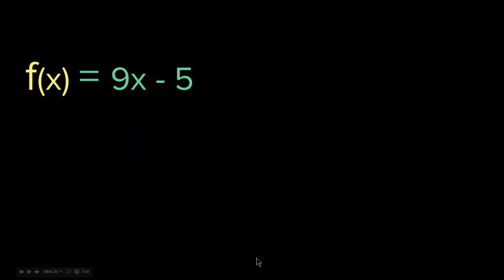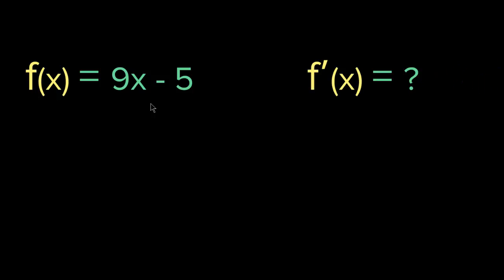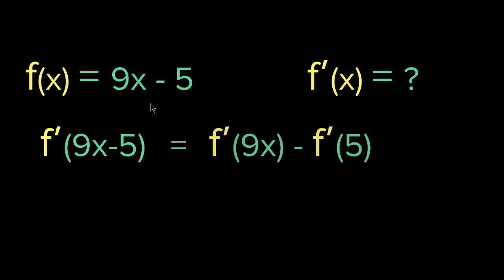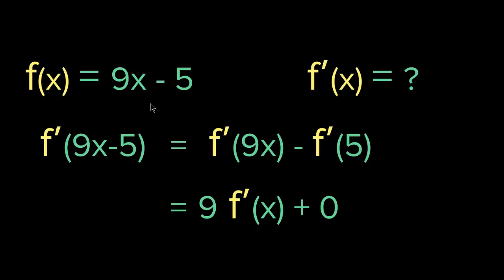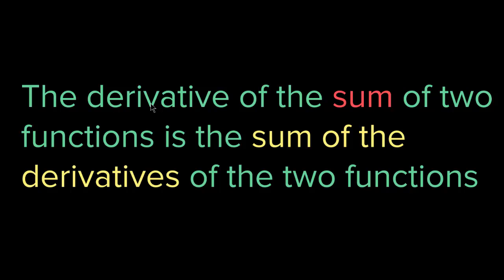Let me give you the last example. Let's say we have f(x) = 9x - 5. As you can see, we have a difference here — a subtraction operation, a minus sign. All you have to do is take the derivative of each. It is 9 times f'(x) plus 0, which eventually gives you 9. So the derivative of f(x) = 9x - 5 is just 9. The derivative of the sum or difference of two functions is the sum or difference of their derivatives. This is the sum or difference rule.